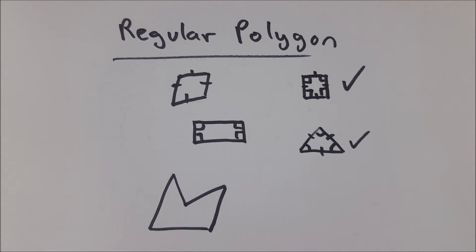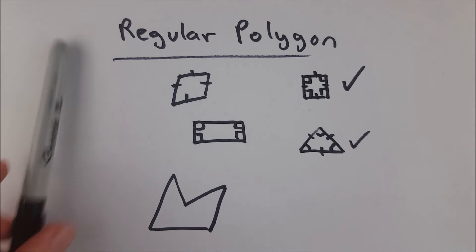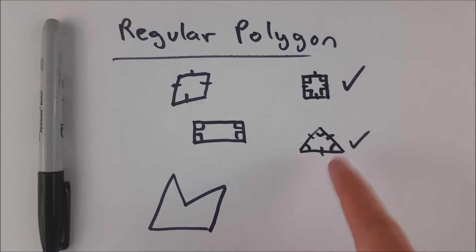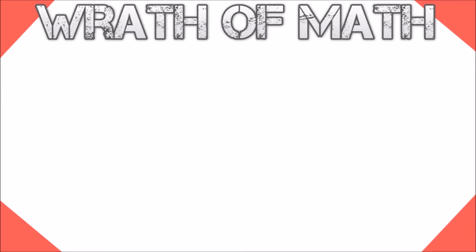In summation, regular polygons are polygons that are equilateral and equiangular — they have congruent sides and congruent angles. I hope this video helped you understand what regular polygons are and what they look like. Let me know in the comments if you have any questions, if you need anything clarified, or if you have any other video requests. Thank you very much for watching — I'll see you next time, and be sure to subscribe for the best math videos on the internet.